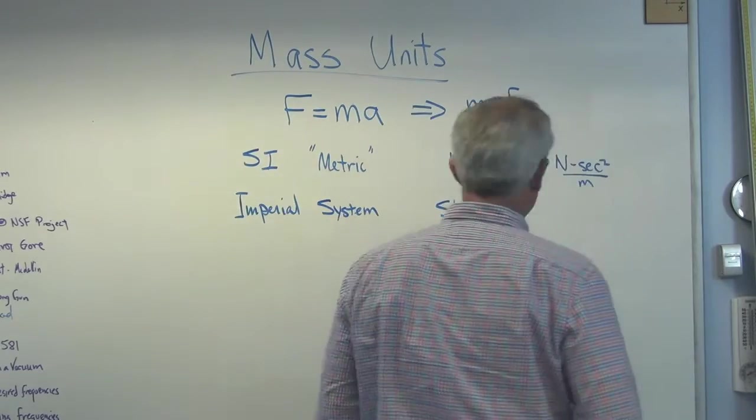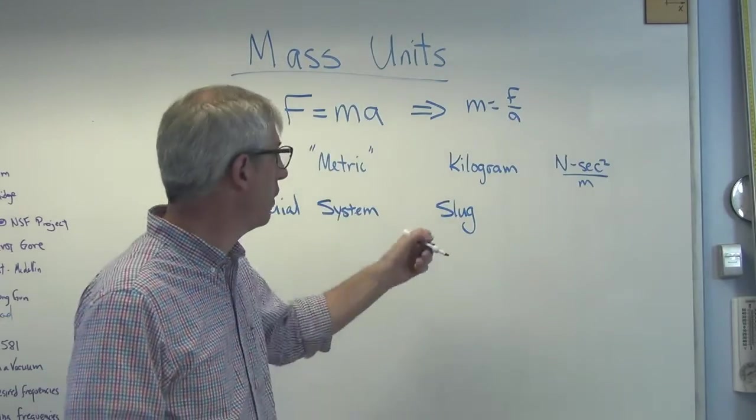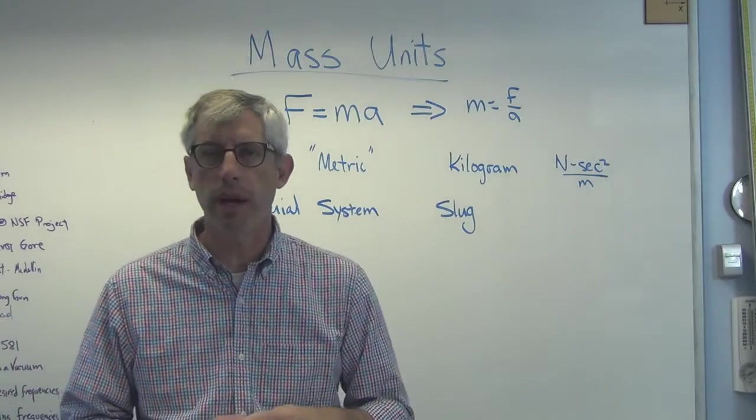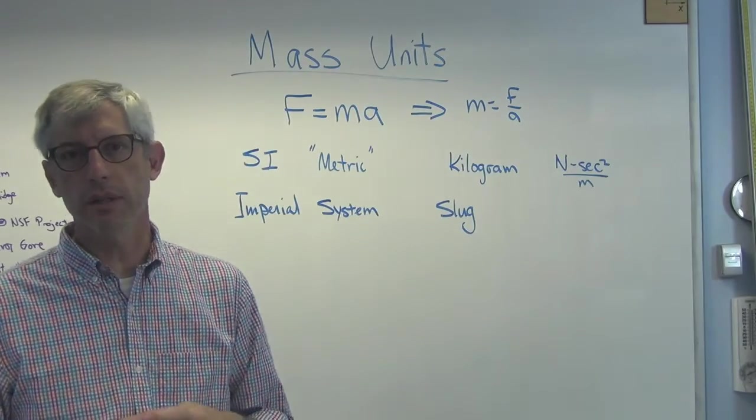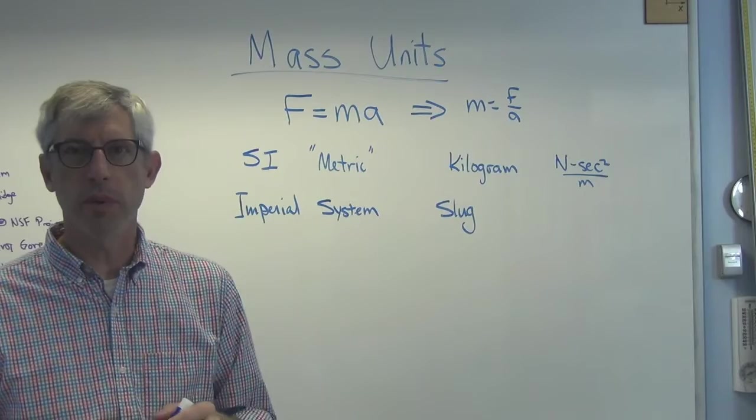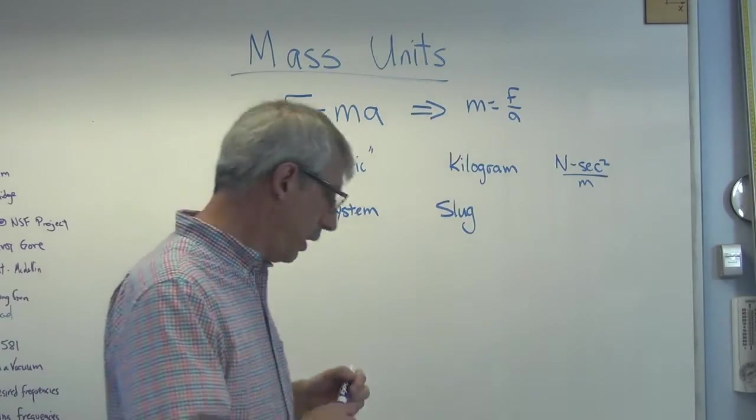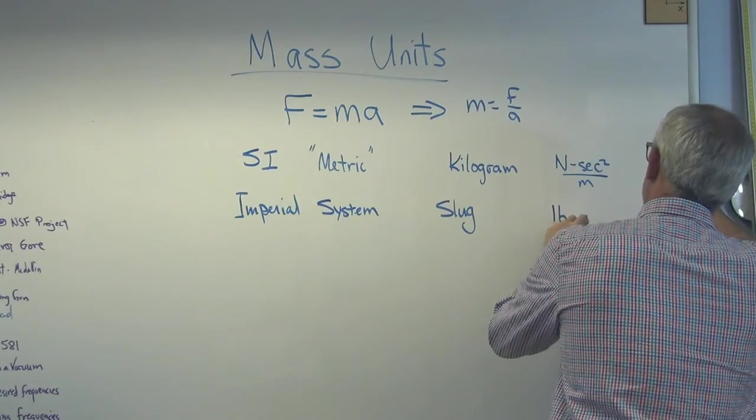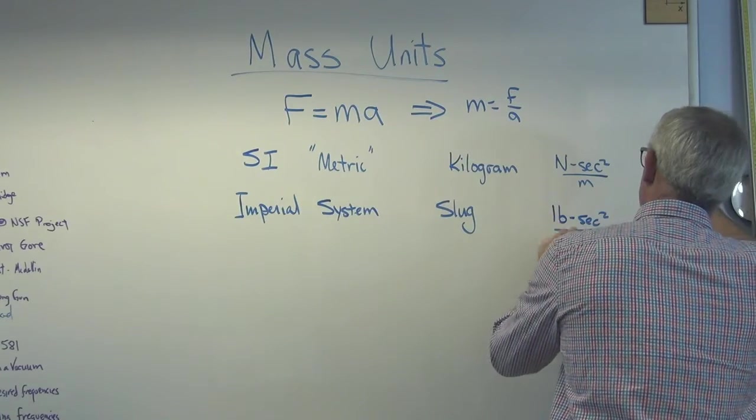Even people raised in the United States struggle with the concept of a slug. What's a slug? Well, it's an imperial unit, so you expect it to be like 146, I don't know, hogs' heads per cubic fortnight or something. But it's just the consistent unit. It is a pound second squared per foot.